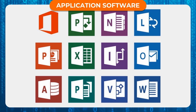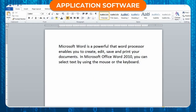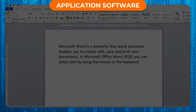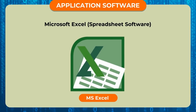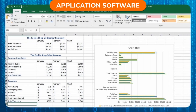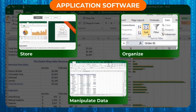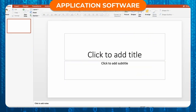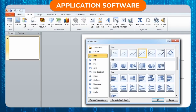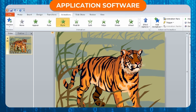Examples of General Purpose Software include: Microsoft Word (Word Processing Software), which enables you to create a document, check for spellings and grammar, editing, and formatting. Microsoft Excel (Spreadsheet Software) can store, organize, and manipulate large quantities of data. Microsoft PowerPoint (Presentation Software) enables a user to present data using graphs, clip arts, a variety of colors and styles for text, and transition and animation features.